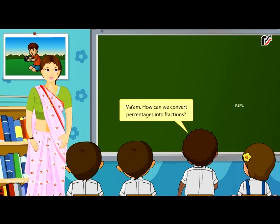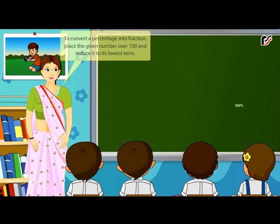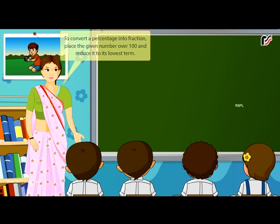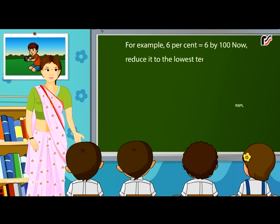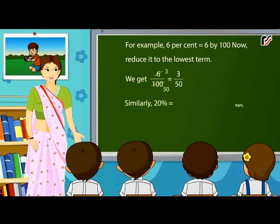How can we convert percentages into fractions? To convert a percentage into a fraction, place the given number over 100 and reduce it to its lowest term. For example, 6% = 6/100 = 3/50. Similarly, 20% = 20/100 = 1/5.